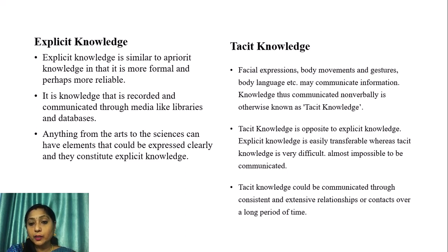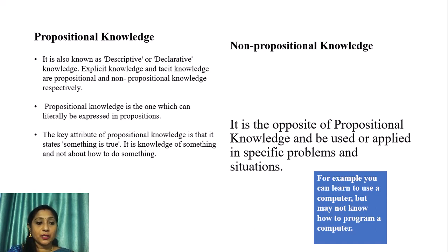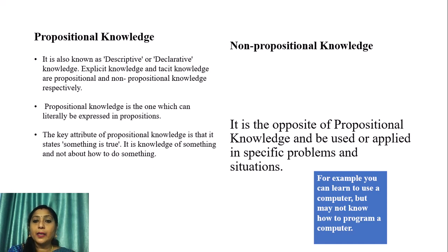Tacit knowledge can be communicated only through consistent and extensive relationships or contacts over a long period of time. Propositional knowledge — also known as descriptive or declarative knowledge — is knowledge that can literally be expressed in propositions. Its key attribute is that it states something is true; it is knowledge of something, not knowledge of how to do something. Non-propositional knowledge is the opposite: it can be used or applied in specific problems and situations. For example, you can learn to use a computer but may not know how to program one.